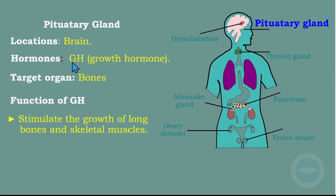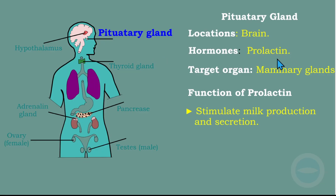Growth hormone (GH) targets the bones. Its function is to stimulate the growth of long bones and skeletal muscle. The next hormone is prolactin. Its target is the mammary glands. The function of prolactin is to stimulate milk production and secretion — so when a female has an infant, this hormone is responsible for the production of milk. Both GH and prolactin are secreted by the pituitary gland.